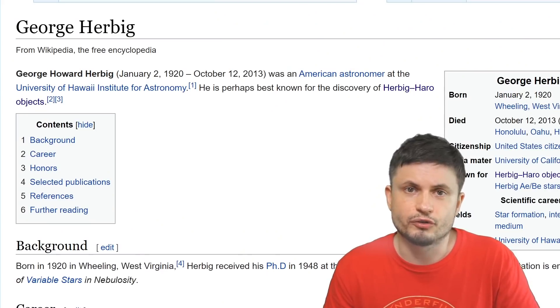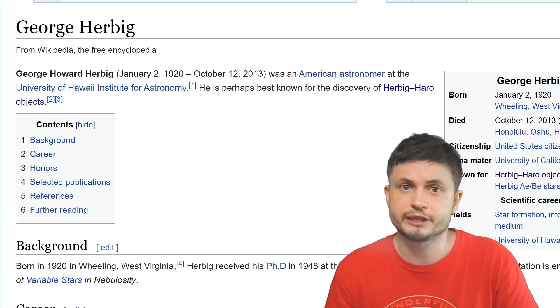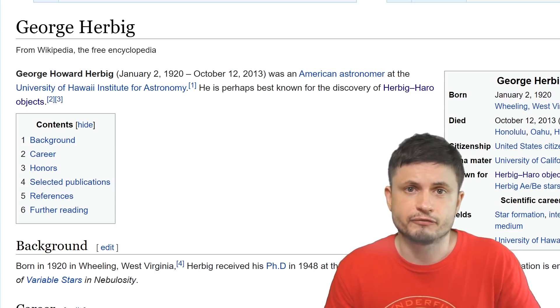The name itself comes from the two people that discovered these objects and explained them separately back in the late 40s. And here we have the American George Herbig and the Mexican astronomer Guillermo Haro. And so technically these are Herbig-Haro objects. But I'm just going to call them HH for short.